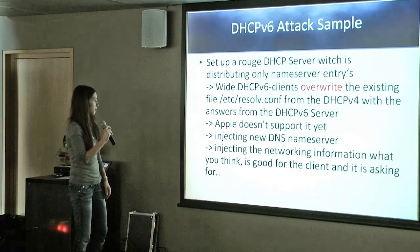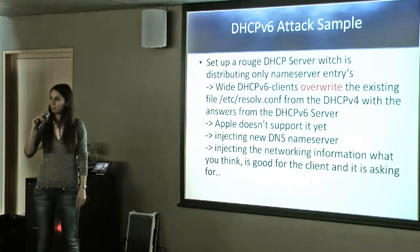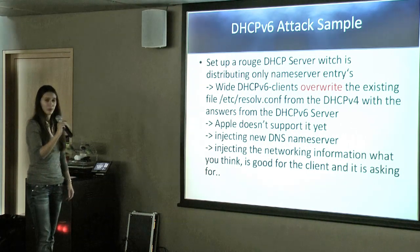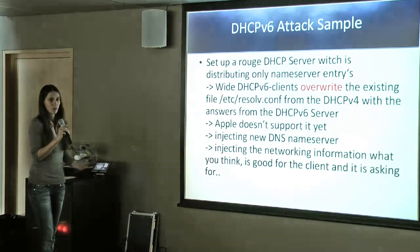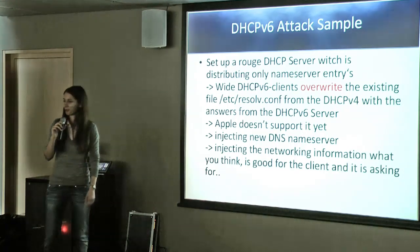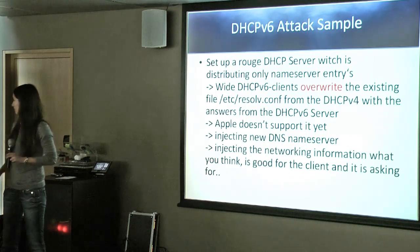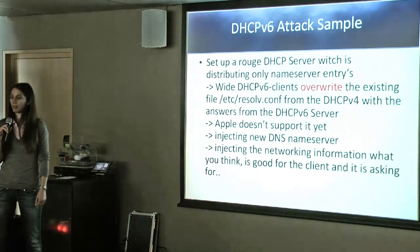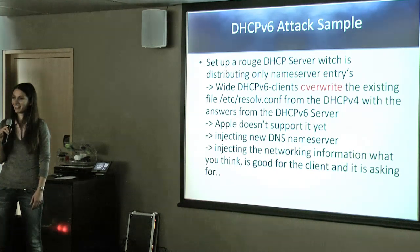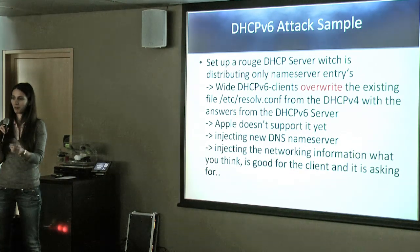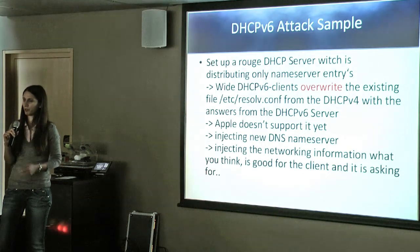Apple does not yet support DHCPv6 fully — they have no DHCPv6 client implemented, so they don't get injected with network information this way. When set to 'Automatic', the Apple device does not query DHCPv6; it only uses it for tunneling. It only gets a link-local IPv6 address.